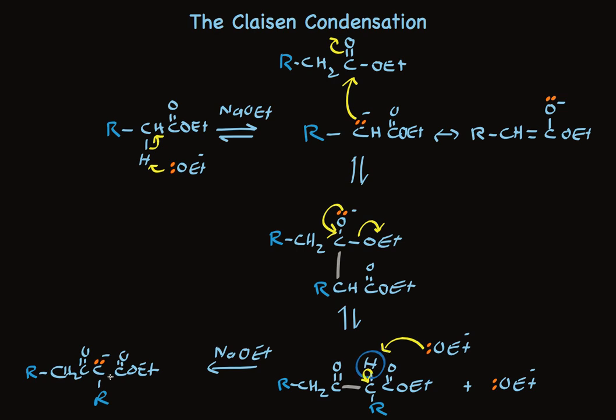And we know that this enolate has three resonance structures. I've shown one here with a negative charge on the carbon, but there are two other resonance structures with negative charges on the oxygen. In any case, it's completely formed, which removes the product from the equilibrium.